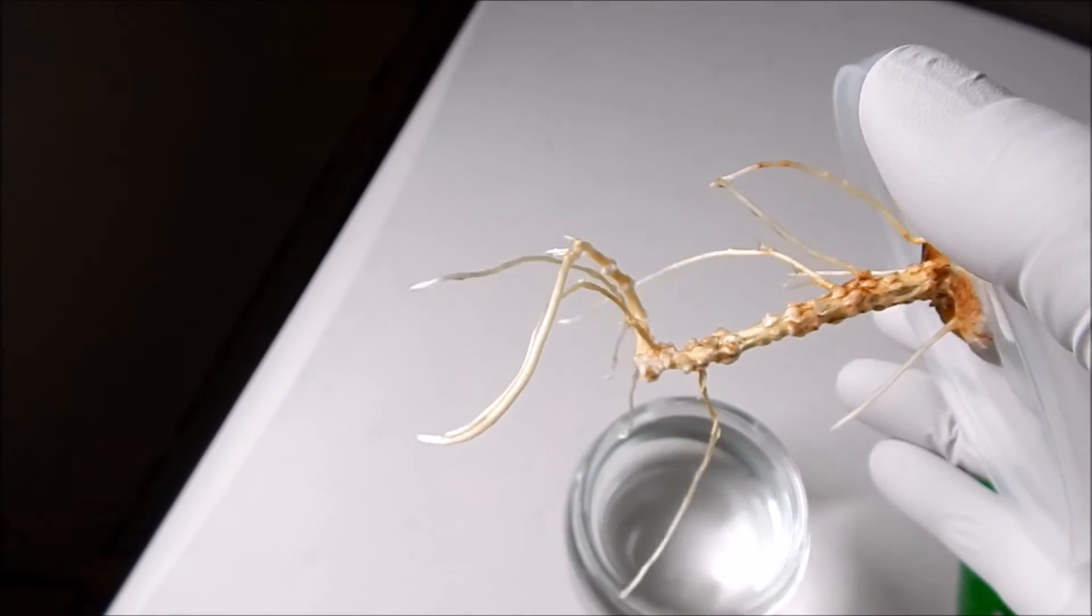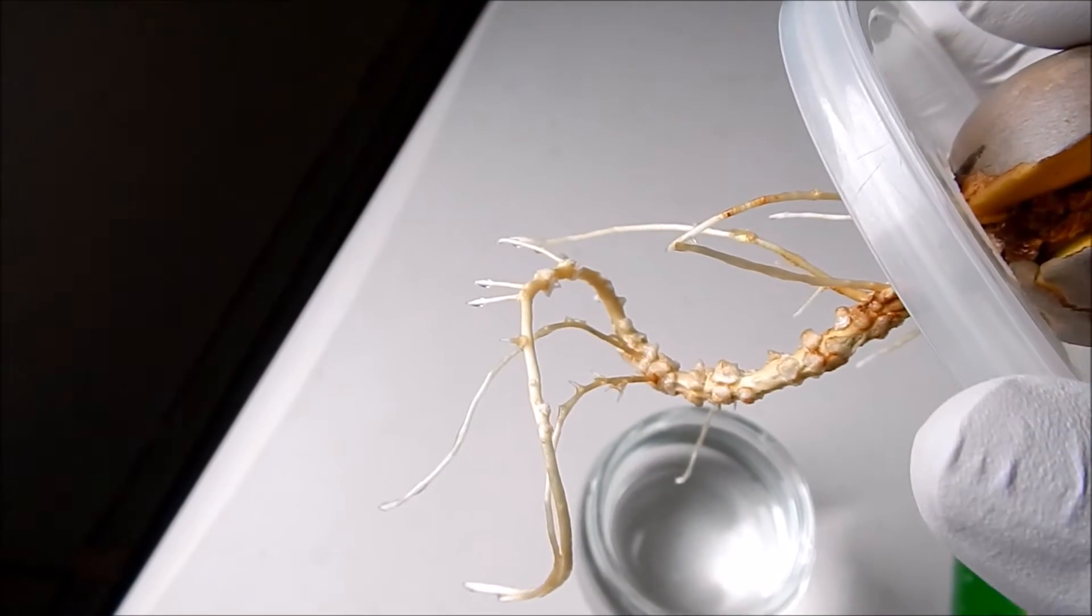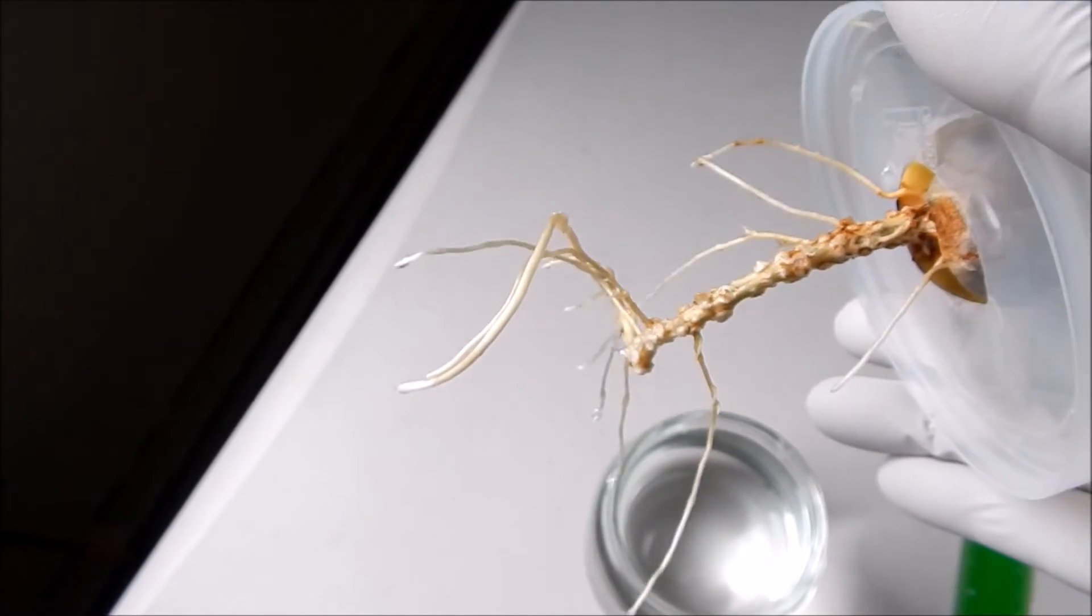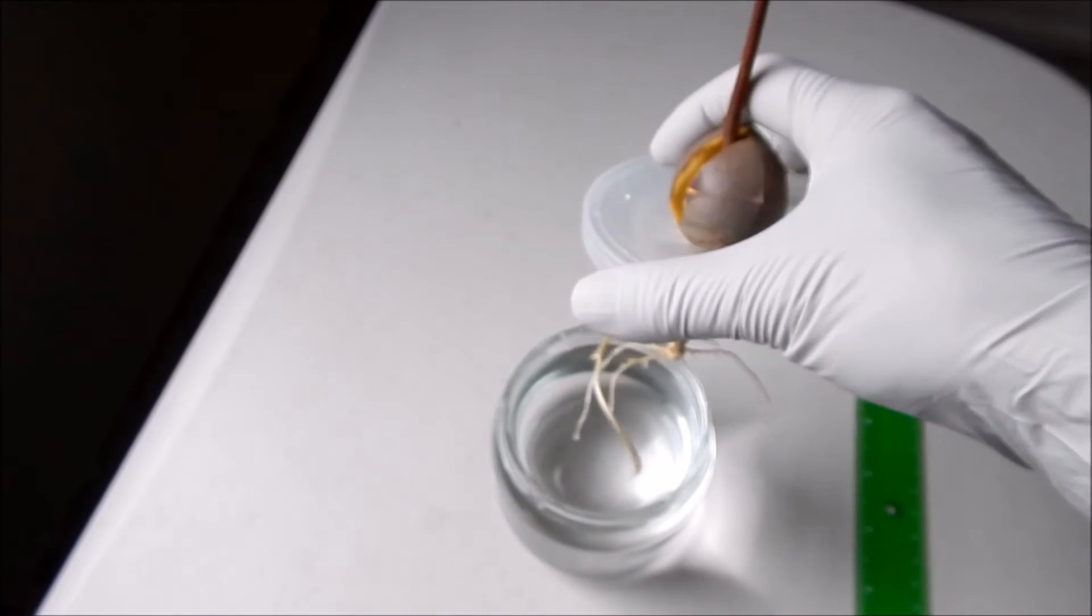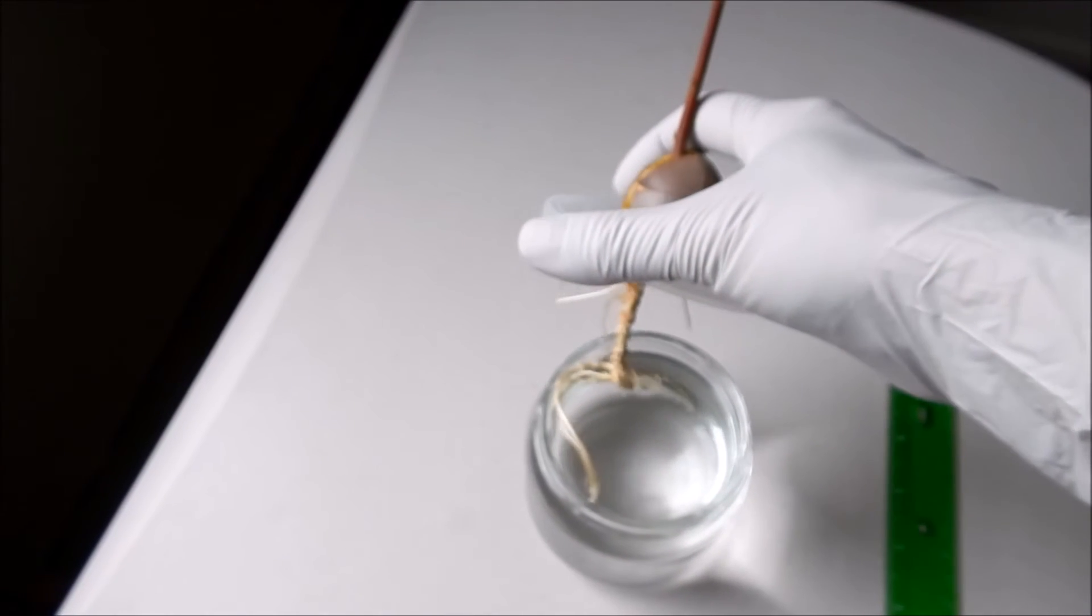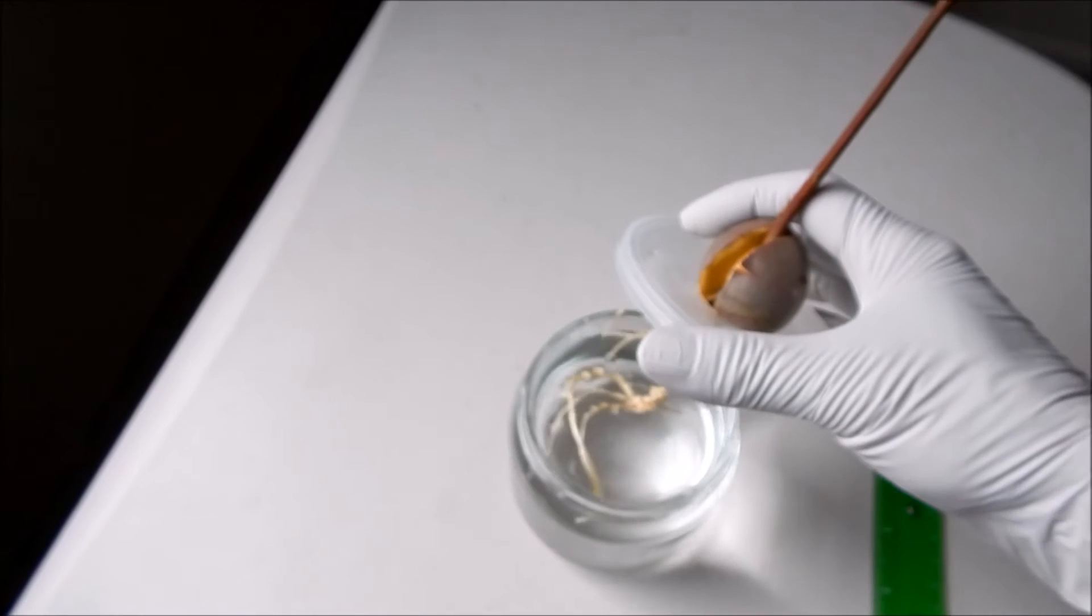I had to rotate the container frequently in order to make corrections for this bending phenomenon to make this seedling looking upright. The stem remains in red color at this stage.